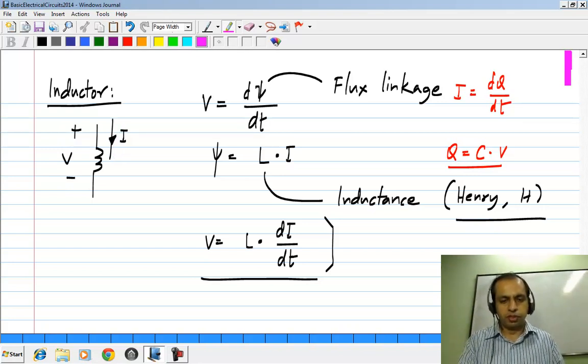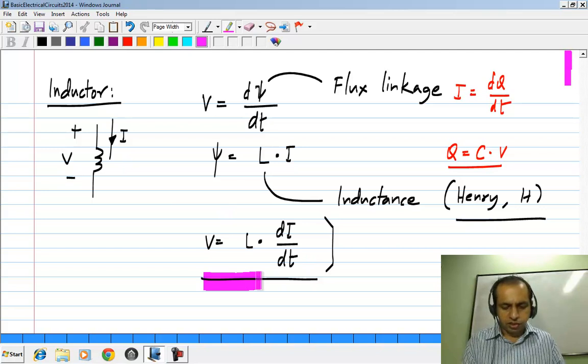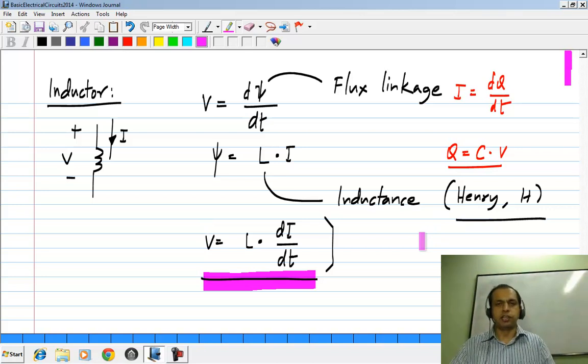It turns out that in most of the physics books, the current would be considered in the other direction, and that is why you get a minus sign in that expression. If you have V like this, and I defined this way, this is the relationship, and this is the induced voltage which opposes the change in magnetic flux linkage inside the inductor.